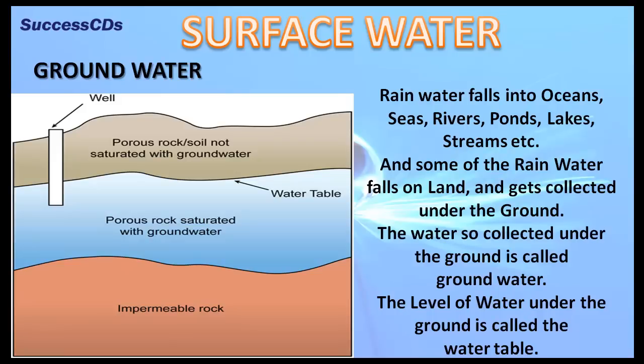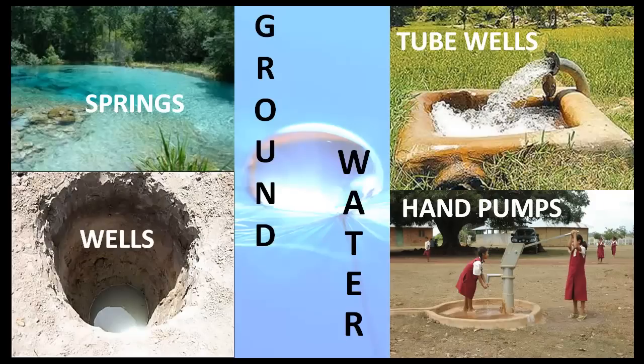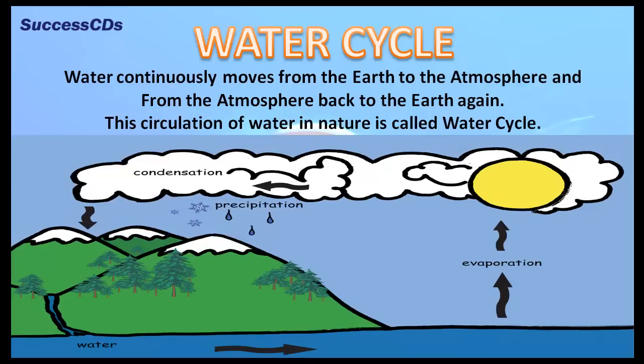The water collected underground is called groundwater. The level of water under the ground is called the water table. Groundwater is found in springs and wells, and is also drawn by hand pumps and tube wells.